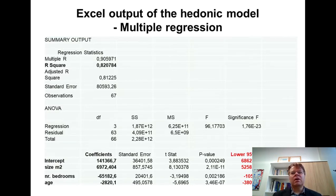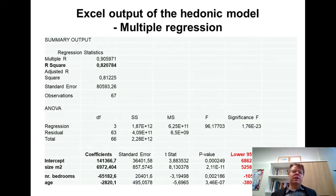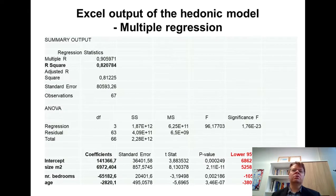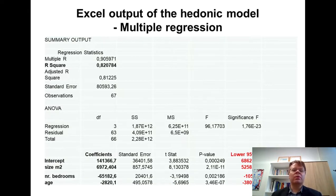Notice that we can test any kind of hypothesis. For example, if some previous studies claimed that the marginal impact of size in square meters in the Tapiola area in Espoo is 5,000 euros per square meter, we could look at whether 5,000 is contained within the confidence interval. We could see that 5,000 is actually outside the confidence interval — therefore, we could also reject the null hypothesis that the marginal impact of size in square meters is equal to 5,000. This applies to any hypothesis, but only two-sided testing is possible.